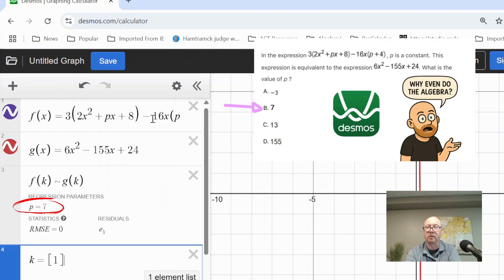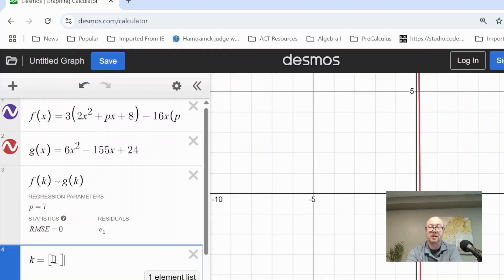If there were multiple variables in here, for example, some of the SAT questions have a and b, then you would need two values to put in here into the set.